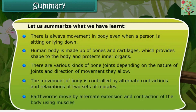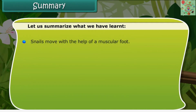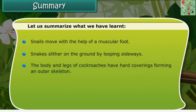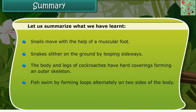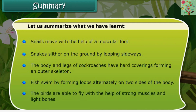Earthworms move by alternate extension and contraction of the body using muscles. Snails move with the help of a muscular foot. Snakes slither on the ground by looping sideways. The body and legs of cockroaches have hard coverings forming an outer skeleton. Fish swim by forming loops alternately on two sides of the body. Birds are able to fly with the help of strong muscles and light bones.